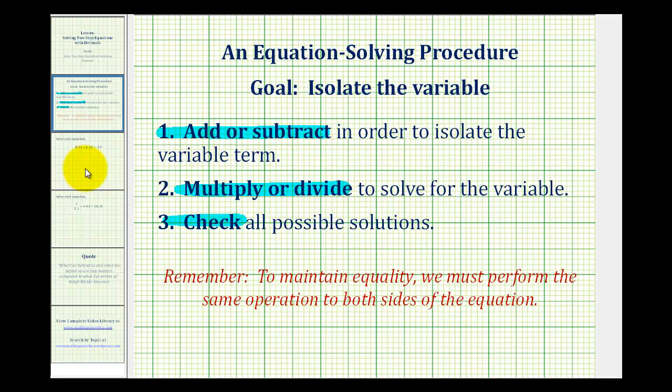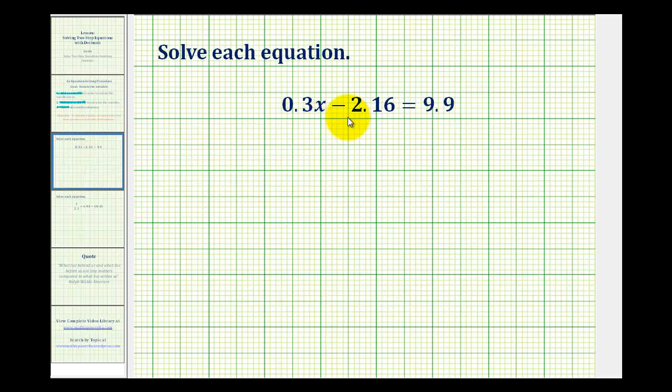Let's take a look at our first example. We have 0.3x minus 2.16 equals 9.9. Since the variable is on the left side of the equation, our goal is to manipulate the equation so it's in the form of x equals some number. So in order to isolate the variable x, we need to undo this minus 2.16 as well as the multiplication involving the 0.3. And we always want to undo the addition or subtraction first. So the first step will be to add 2.16 to both sides of the equation. Here, we need to be careful to line up the decimal point and the corresponding place values so we can add these decimals correctly.